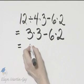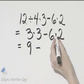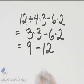I'll multiply. 3 times 3 is 9 minus, if you don't mind, I'll go ahead and multiply. 6 times 2 is 12. So I have 9 minus 12.